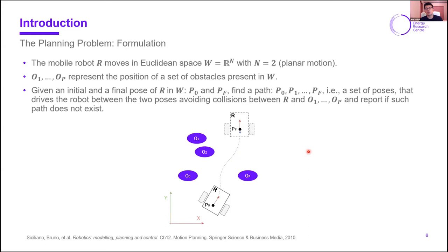First I will explain the formulation of the planning problem, which will give a framework for the development of the navigation system. We consider that the mobile robot moves in Euclidean space R^n, which in this case will be equal to two because we will consider planar motion. We also define a set of obstacles represented by the letter O. Given an initial pose and a final pose in that Euclidean space, what we want to do is find the set of poses or a path that drives the robot between the initial pose and the final pose, avoiding collisions between the robot and the obstacles. That is basically what planning is all about. We will focus on how to find those obstacles and how to find the path, the set of poses that drive the robot safely towards the goal.